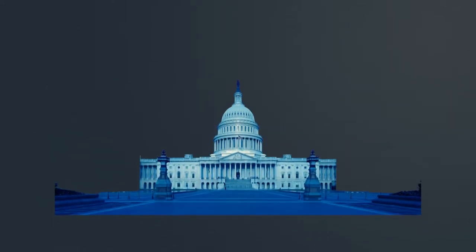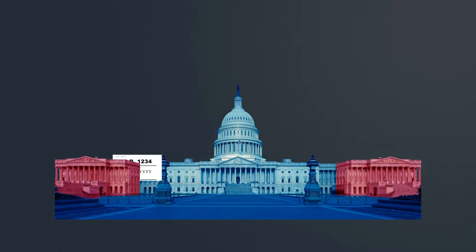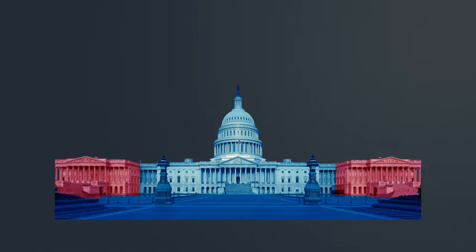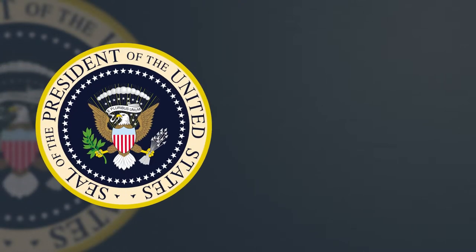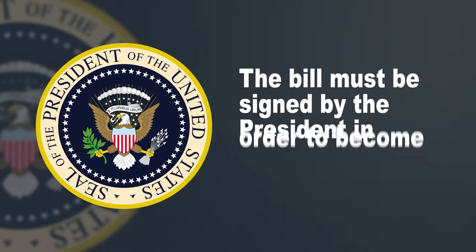In order for a new law to be made in the US, it first starts in Congress. After a bill passes with a majority of votes in the House and the Senate, the bill then gets sent to the president's desk. In order for the bill to become a law, the president has to sign it.